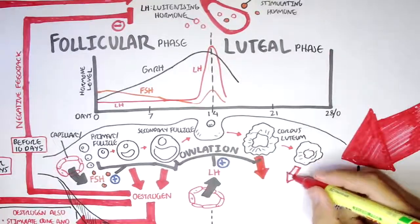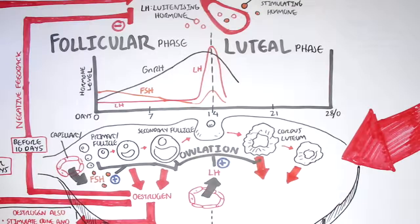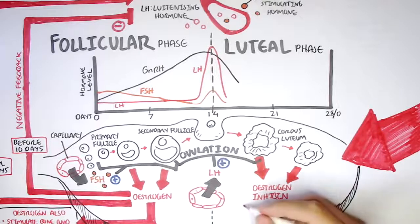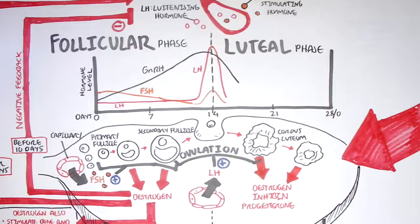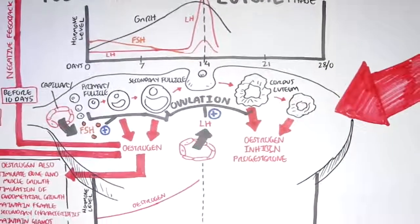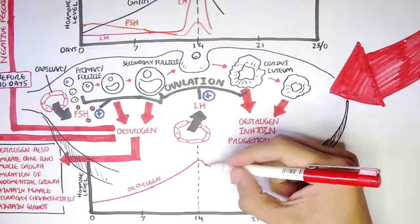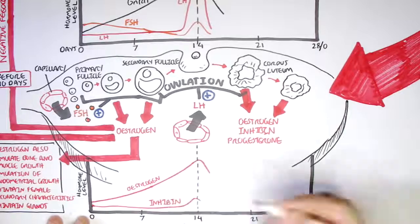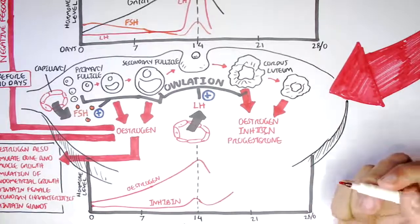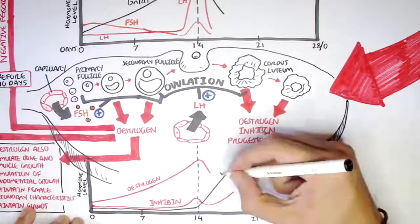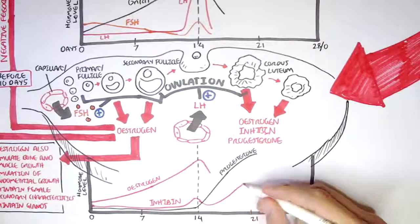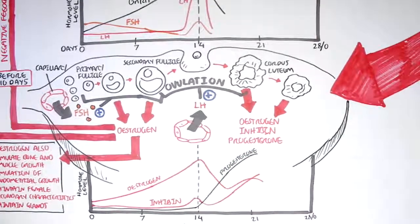The corpus luteum will slowly degrade, but it also secretes three hormones: estrogen, inhibin, and progesterone. On the graph, estrogen increases until ovulation then drops slightly. Inhibin was not present until after ovulation, then begins to increase thanks to the corpus luteum. Progesterone levels were low until after ovulation, then rise during the luteal phase. At 21 days, progesterone is increasing, inhibin is increased, and estrogen is still detectable — all produced by the corpus luteum.